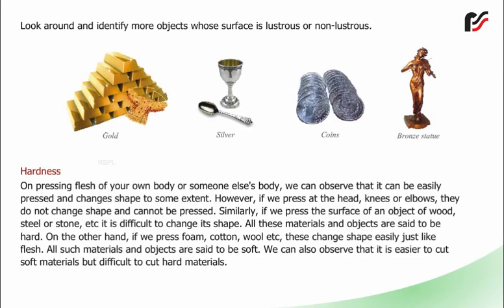Hardness: On pressing flesh of your own body, we can observe that it can be easily pressed and changes shape to some extent. However, if we press at the head, knees or elbows, they do not change shape and cannot be pressed. Similarly, if we press the surface of an object of wood, steel or stone, it is difficult to change its shape — all these materials are said to be hard. On the other hand, if we press foam, cotton, wool, etc., these change shape easily just like flesh, and all such materials are said to be soft. It is easier to cut soft materials but difficult to cut hard materials.